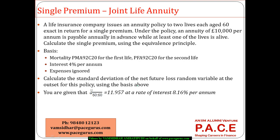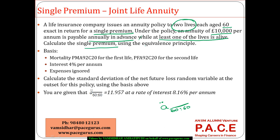Let's look at this numerical on joint life annuity, computing the single premium. A life insurance company issues an annuity policy to two lives, each aged 60. In return for a single premium, an annuity of 10,000 per annum is payable annually in advance while at least one of the two lives is alive. We need to calculate the single premium using the equivalence principle.